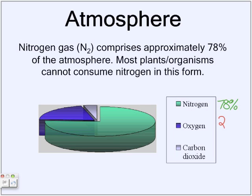78% of the atmosphere is nitrogen, and the rest — about 21% — would be oxygen, and then about 1% would be carbon dioxide and other chemicals dissolved in the atmosphere.